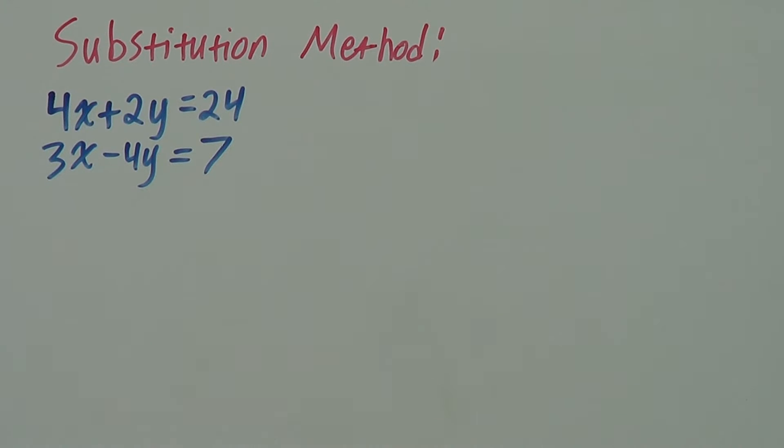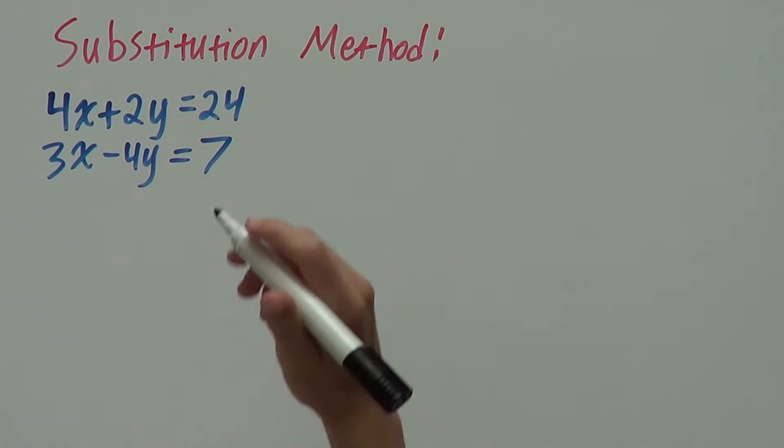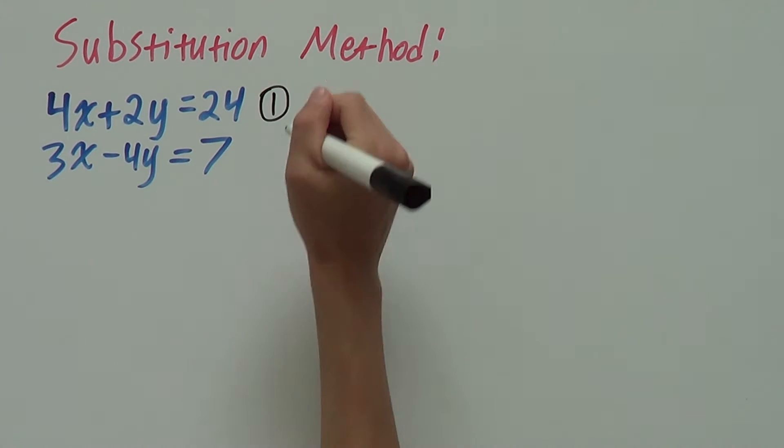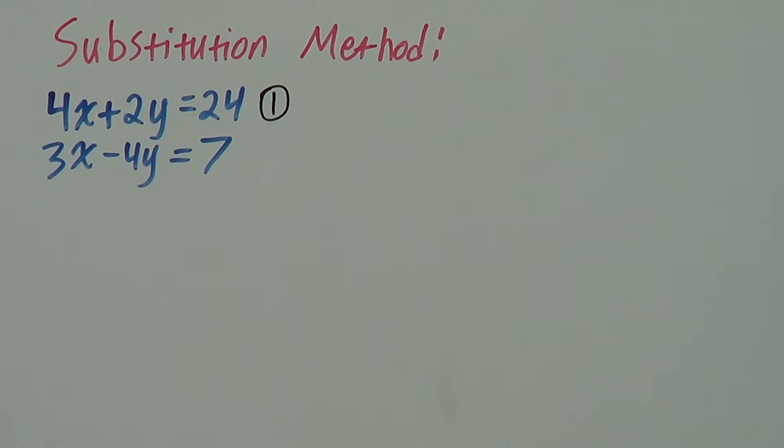So, we have our simultaneous equation here. Our first equation is 4x plus 2y equals 24. That's our first equation and our second is 3x minus 4y equals 7. That's our second.